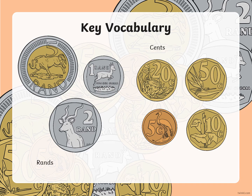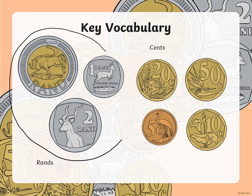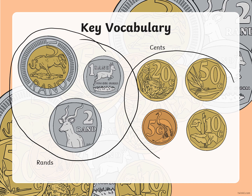On the left hand side of the page we have a 5 Rand coin, a 2 Rand coin and a 1 Rand coin. So these are our Rand coins. Then on the right hand side of the page we have our cent coins. We have a 50 cent coin, a 20 cent coin, a 10 cent coin and a 5 cent coin. So these are our cent coins.